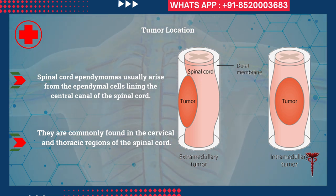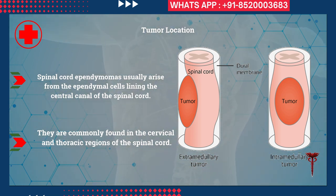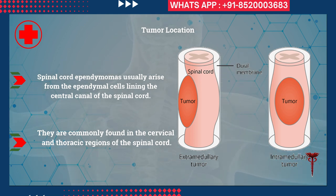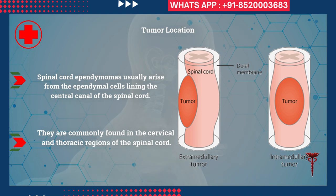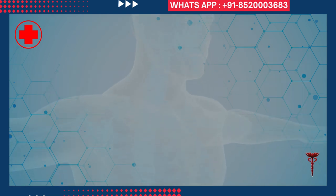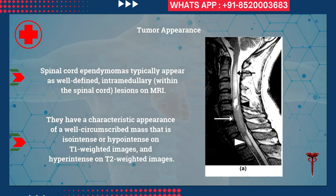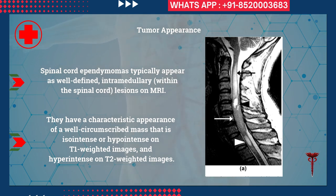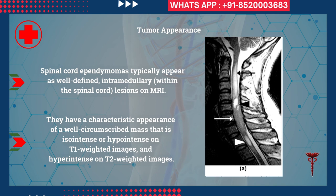You can see here there is bulging of the spinal cord and the tumor is present within it. Ependymomas are most commonly found in the cervical and thoracic regions of the spinal cord. On MRI, these tumors are intramedullary lesions of the spinal cord.